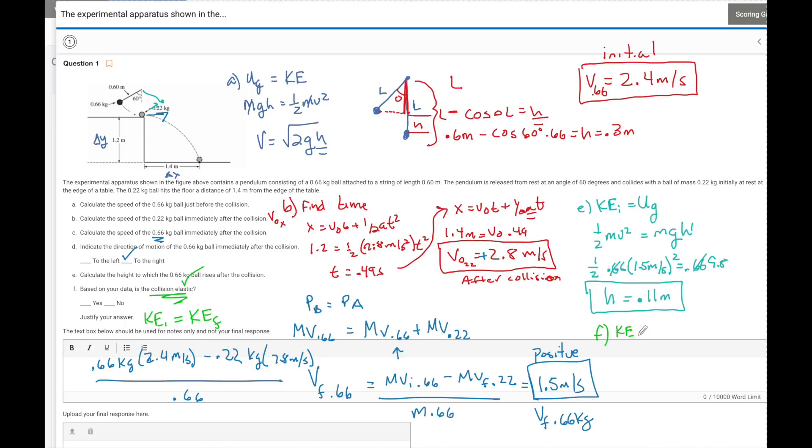So I'm going to find the kinetic energy of the system initially, which is just from the speed of this ball, because this ball did not contribute any kinetic energy to the system before. That's 1/2 mv squared, 1/2, 0.66 kilograms times the initial speed, 2.4 squared. That is equal to 1.9 joules. Kinetic energy final of the system is going to be the kinetic energies of both balls. So I'm going to have 1/2, 0.66 times 1.5 squared. That's right here. Plus the 1/2, 0.22 times 2.8 squared. The kinetic energy after is equal to 1.3 joules.